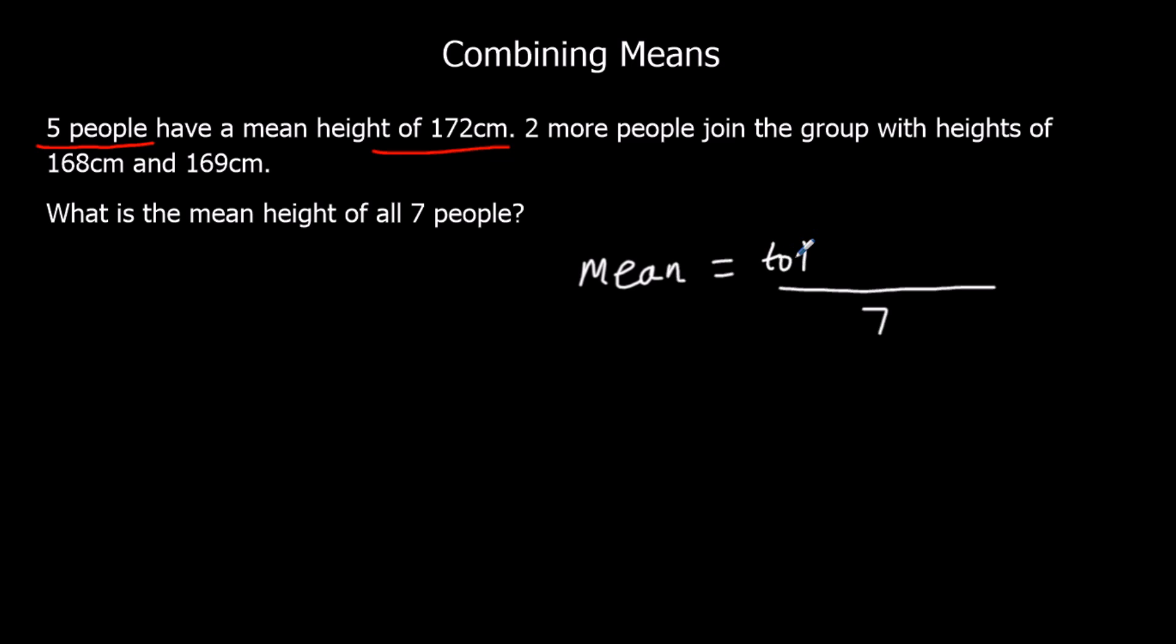We need to know the total for the first five. I'll put total five. We're going to add 168 and 169 to that, and then divide by seven. So what is the total for the first five? So total for the first five is 172 times five, which is 860. So those five people, their heights add up to 860 centimeters.